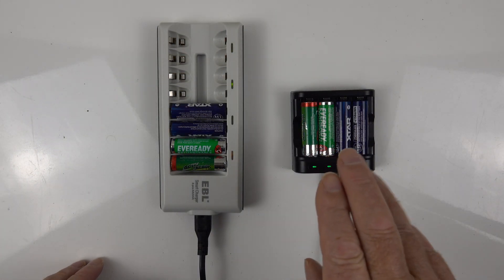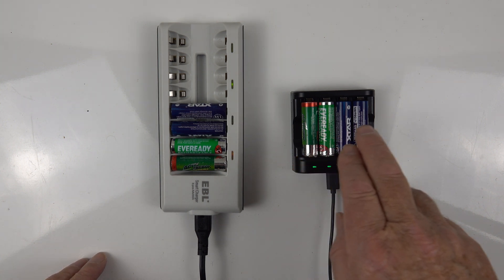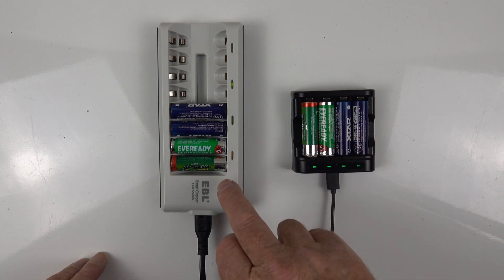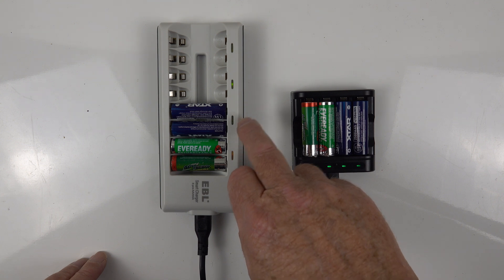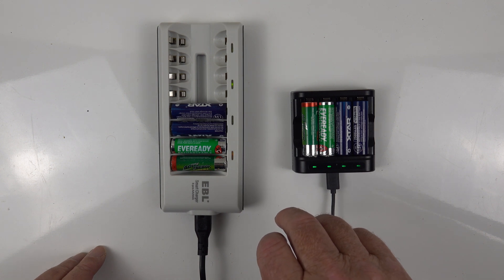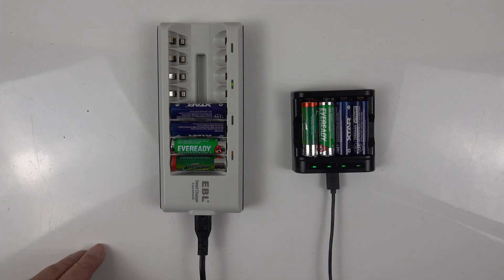And as you can see, the Xtar L4 has charged the nickel metal hydrate batteries and the lithium ion. So we've got 1.2 volts and 1.5. The EBL, well, nothing happening at the moment. We're still charging. It's roughly two and a half hours gone by at the moment. And we'll come back in another half hour and see if the EBL has caught up.